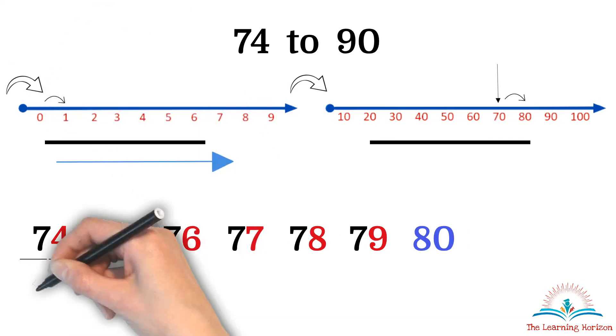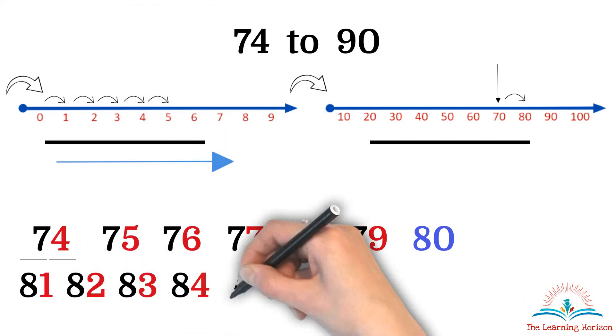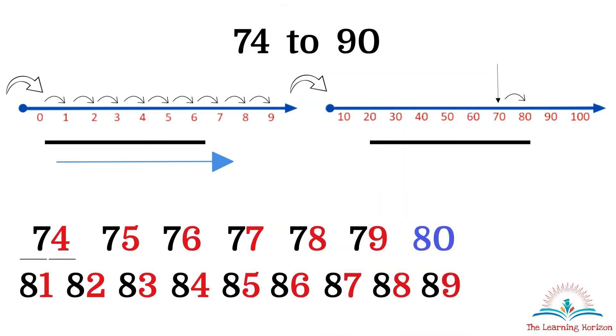81, 82, 83, 84, 85, 86, 87, 88, 89. No more digits. Move on to the next 10's. That is 90. So we have counted forward from 74 until we got 90.